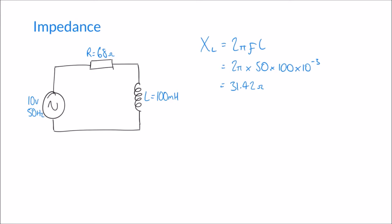So now we know two things about this circuit: there is a resistance of 68 ohms in series with a reactance of 31.42 ohms. The temptation is to think that because resistance and reactance are both measured in ohms and they're in series, the impedance must simply be 68 + 31.42. In truth though, we can't do this — impedance is not found by simply adding resistance and reactance. We need a different method. Z is our letter for impedance, also measured in ohms, and it's calculated as: Z² = R² + X².